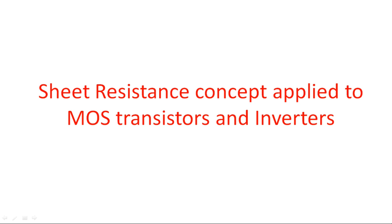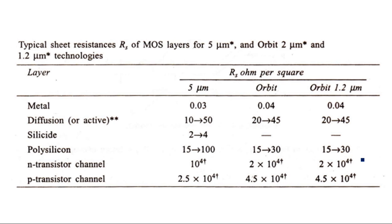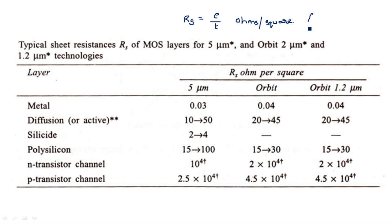We have already learned in the previous video what sheet resistance means. Sheet resistance R_s is equal to ρ/T. The units are ohms per square. We get a particular resistance value for a given sheet when L is equal to W — that is for a feature size where L equals W, which is why the 'square' unit is used.